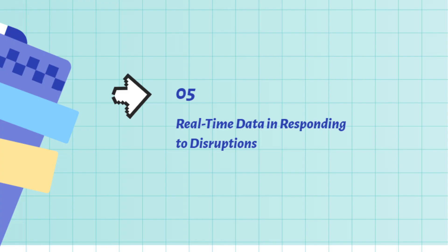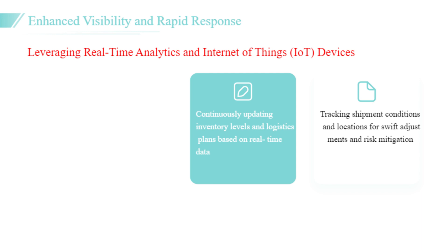Real-time data plays a vital role in enabling organizations to respond rapidly to supply chain disruptions. By leveraging real-time analytics, businesses can continuously update inventory levels and logistics plans, allowing for swift adjustments in response to unforeseen events. For instance, companies utilizing Internet of Things (IoT) devices can track the status of goods in transit, providing live updates on shipment conditions and locations. This enhanced visibility facilitates quicker decision-making and allows organizations to adapt their strategies effectively, ultimately minimizing potential losses.